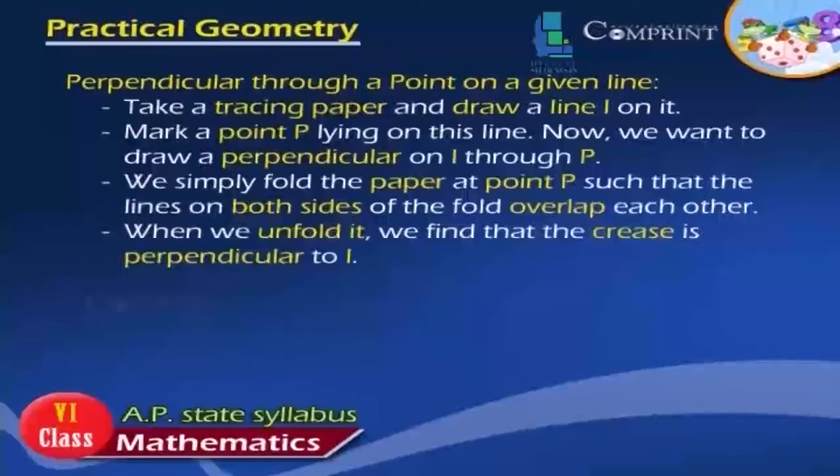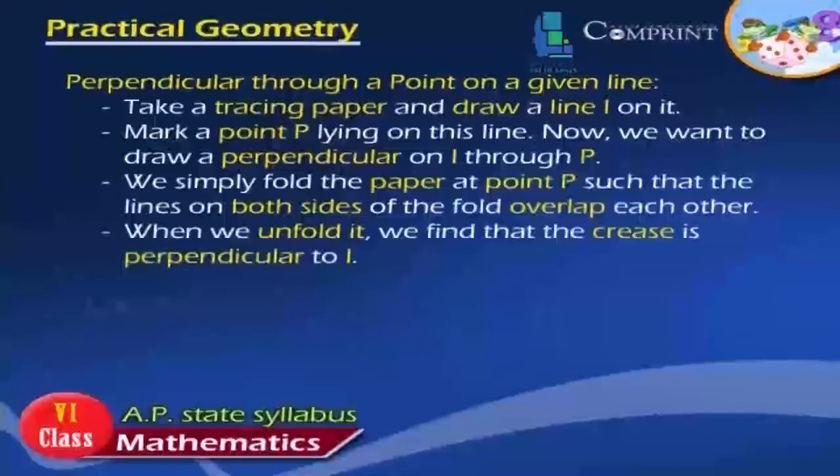Perpendicular through a point on a given line: Take a tracing paper and draw a line L on it. Mark a point P lying on this line. Now, we want to draw a perpendicular on L through P. We simply fold the paper at point P such that the lines on both sides of the fold overlap each other. When we unfold it, we find that the crease is perpendicular to L.